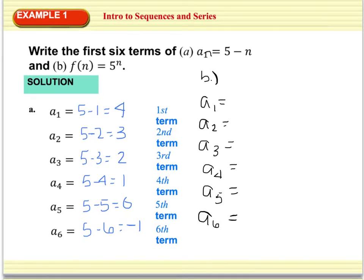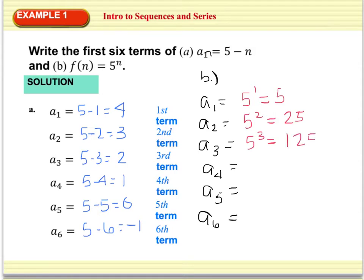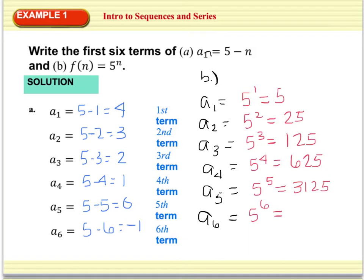For part b, we're going to use f of n equals 5 to the nth power. A sub 1: 5 to the first equals 5. Second term: 5 squared equals 25. Third term: 5 cubed equals 125. Fourth term: 5 to the fourth equals 625. Fifth term: 5 to the fifth is 3,125. And sixth term: 5 to the sixth equals 15,625.